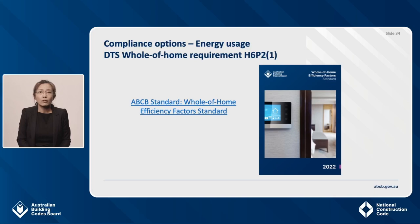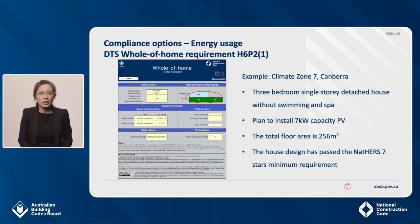Before giving an example for the whole-of-home calculator, I'd like to show you the whole-of-home efficiency factor standard, which can be accessed from the ABCB website. Here is an example using the whole-of-home calculator. The heating and cooling uses a heat pump, and the water heater uses an off-peak heat pump. Together with a 7 kW PV system to offset, the net equivalent energy usage is kept below the allowance of 5.8 kW of PV capacity. Please note that installed PV (ER) is not mandatory. You could meet the whole-of-home requirement without PV if the net equivalent energy usage calculated in accordance with A is not greater than the energy usage allowance B.